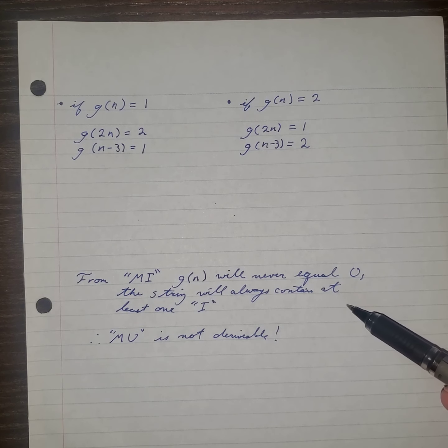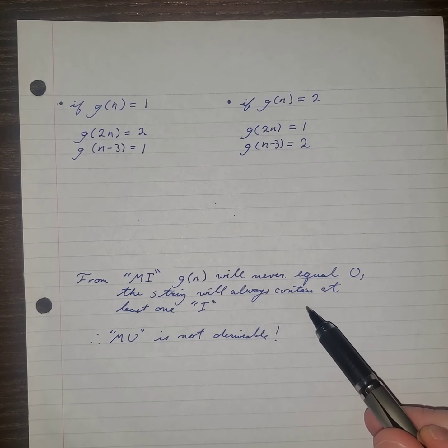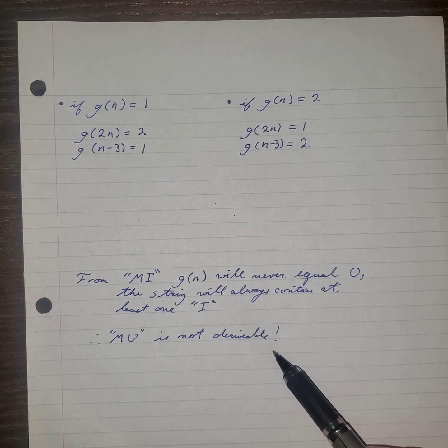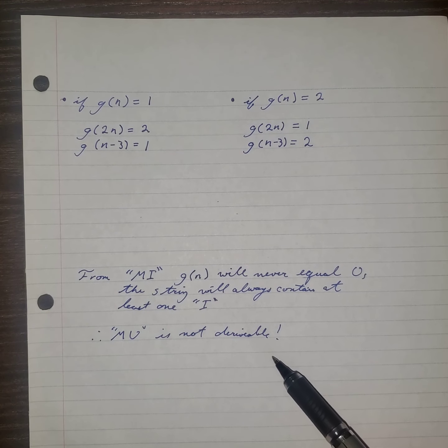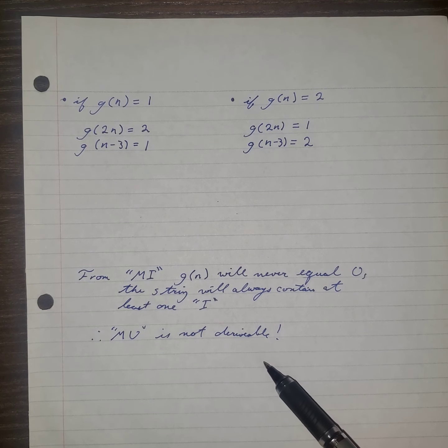So from the MI axiom, G of N will never equal 0. The string will always contain at least one I. Therefore, MU is not derivable within the MIU system from the axiom given, and Douglas Hofstadter's challenge is not possible.